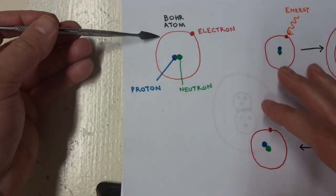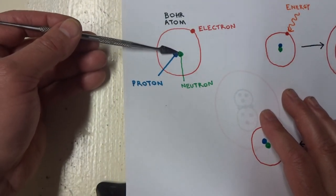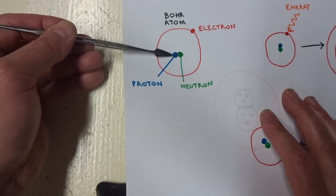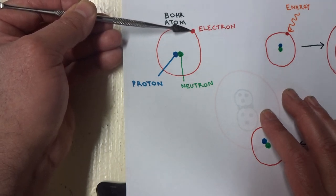This is a model of the atom. The atom has a nucleus that consists of a neutron and a proton. Orbiting the atom of the nucleus of the atom is the electron.